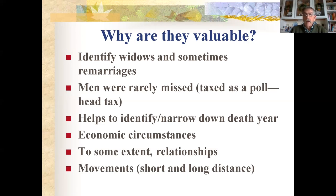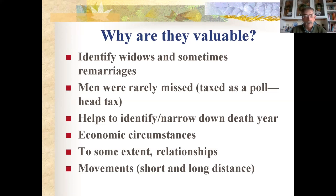Tax lists help identify and narrow down death years: if someone's property is taxed the next year to their administrator or widow, they probably died. Economic circumstances are visible too — someone repeatedly with no real property was probably poor, while others with tons of property were well off. You can either get or infer relationships, and you can track movements: someone taxed in one place and the next year taxed in a different location or another state.